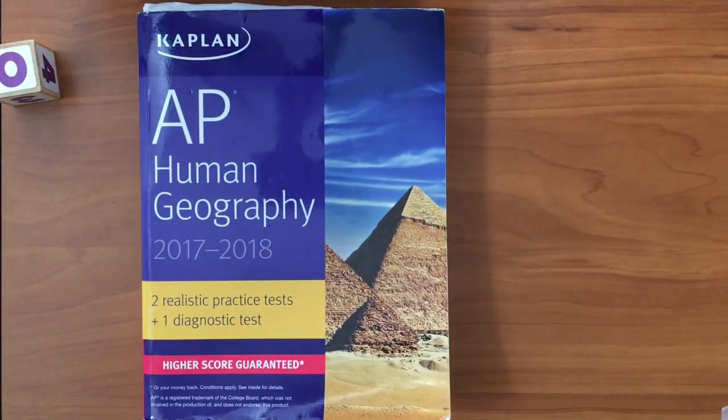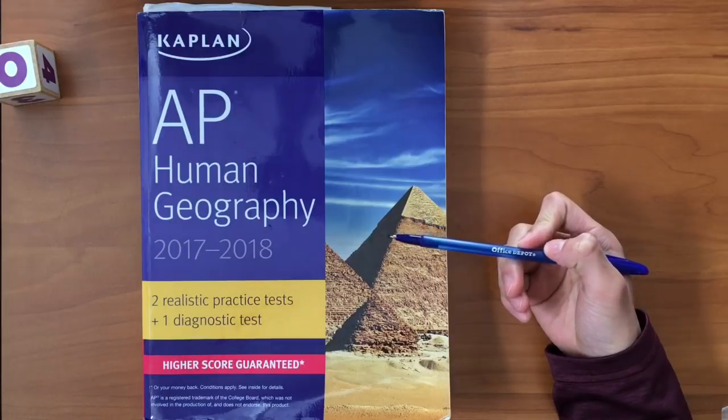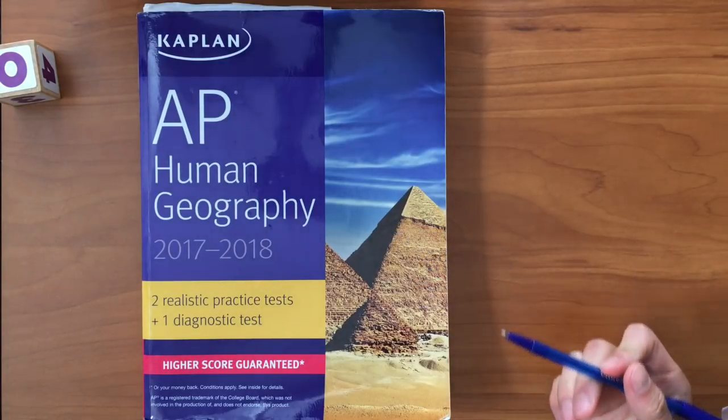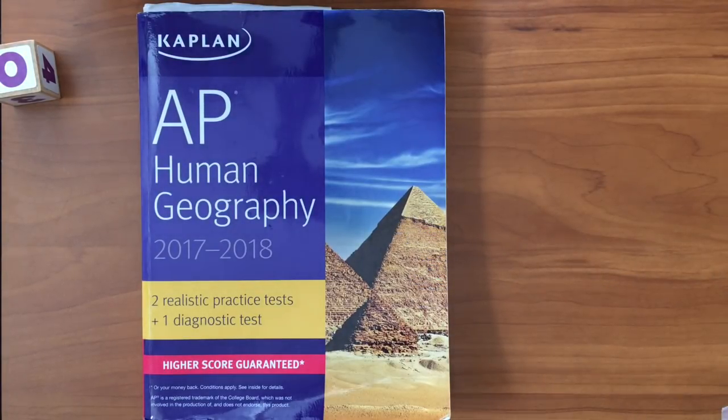The first tip is definitely to get a review book. So this is a review book that I got from last year, and as you can see, this is the Kaplan edition. This is a good review book because you want a review book that's going to give you lots of practice and will also give you a summary of everything you've learned throughout the year.